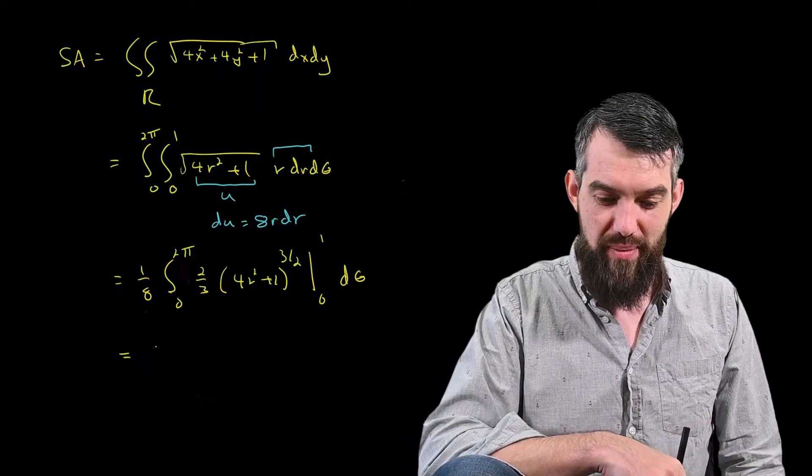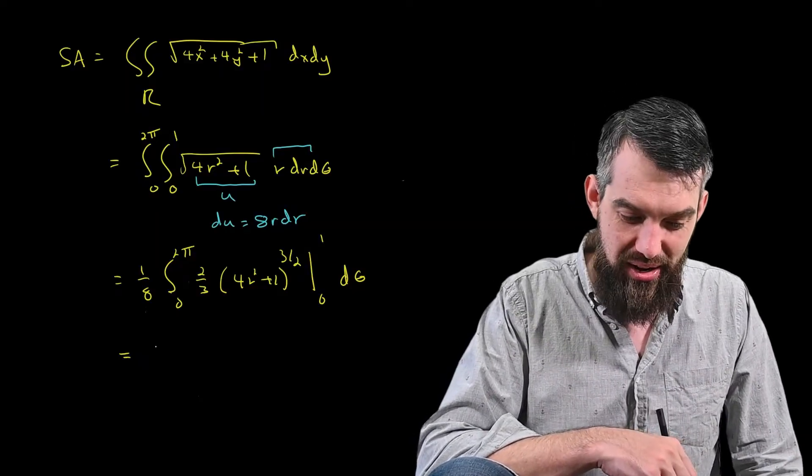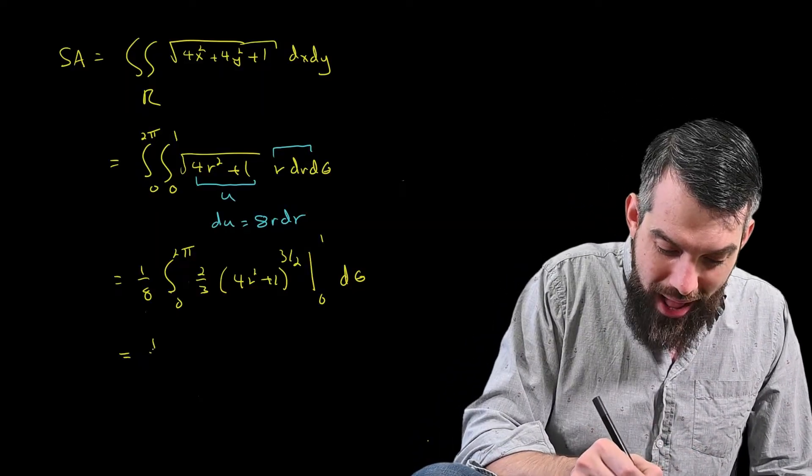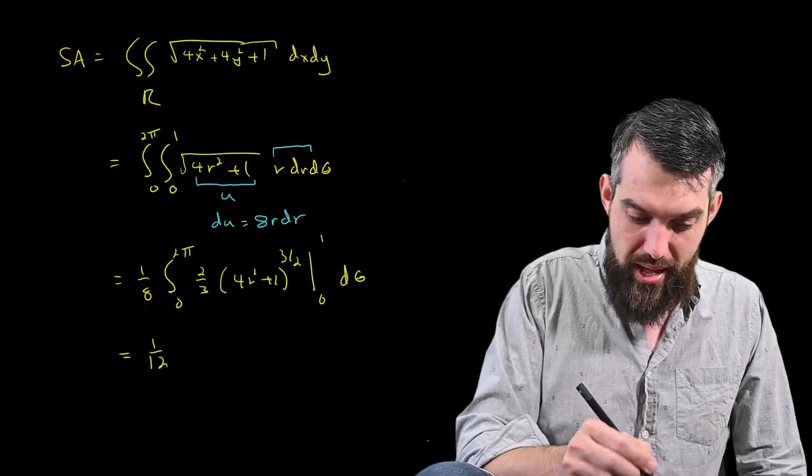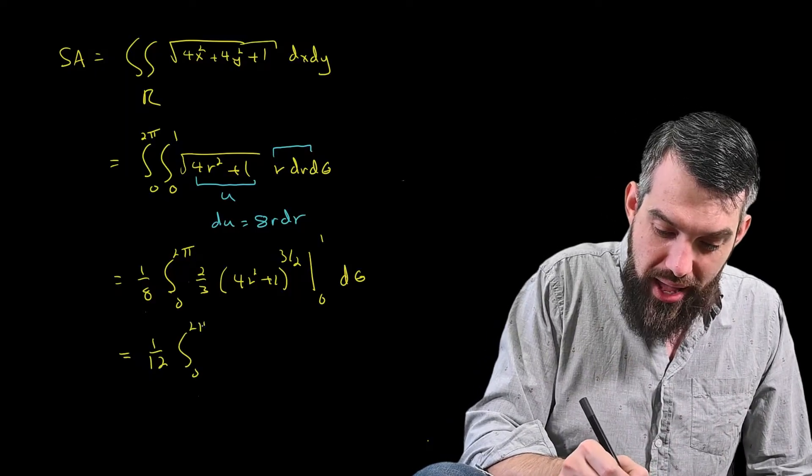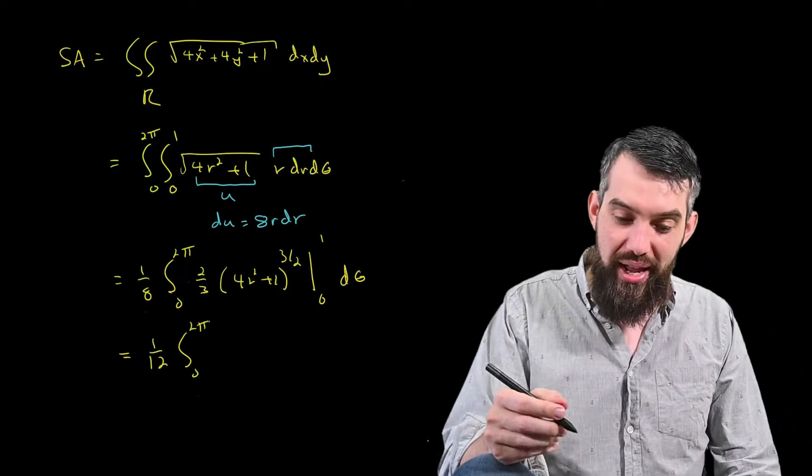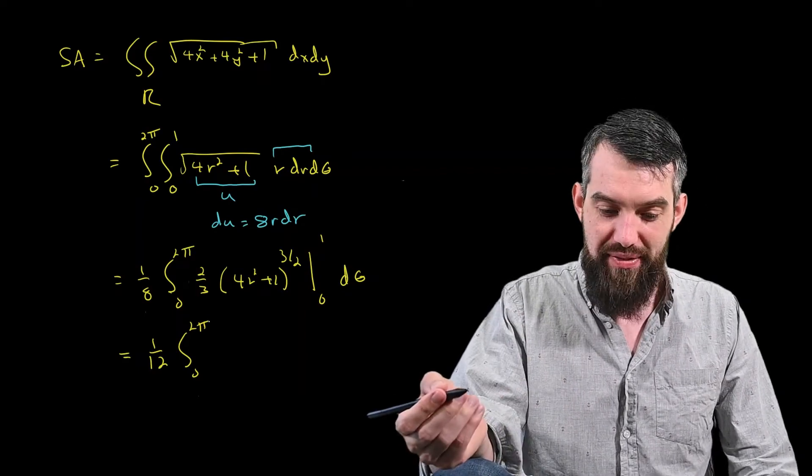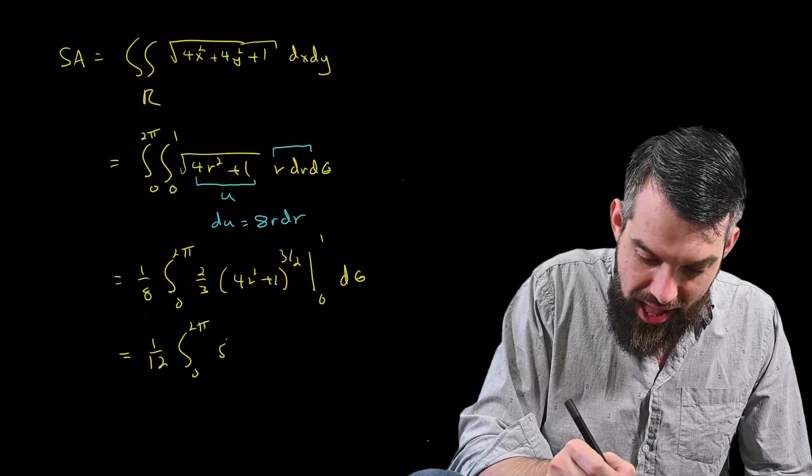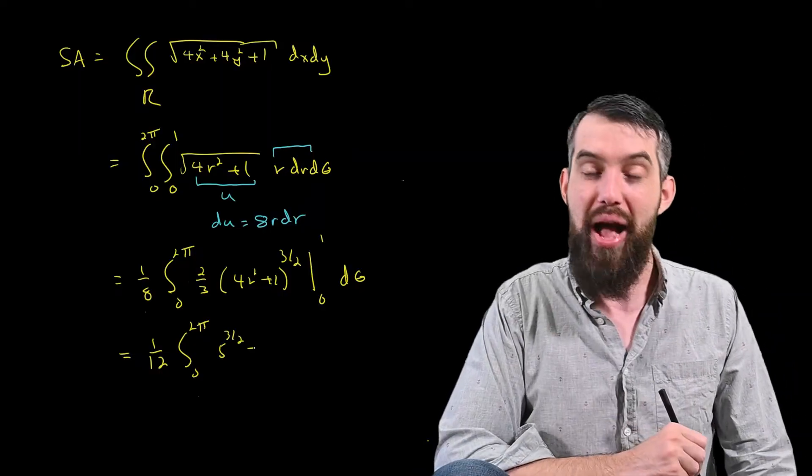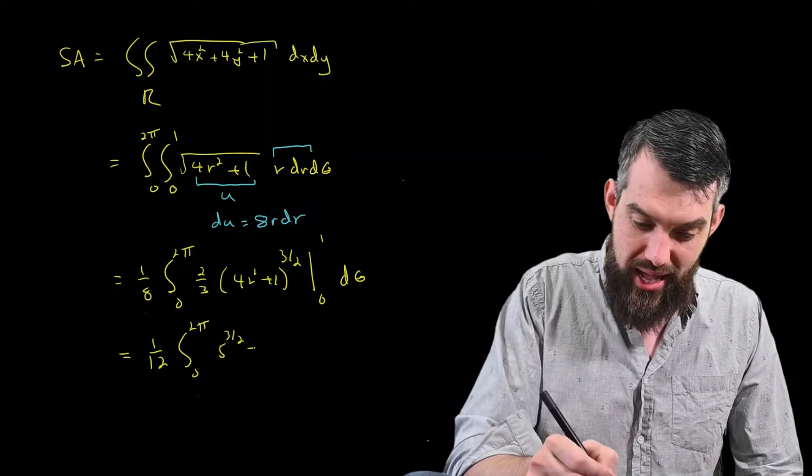This is just a computational problem at this point. So this looks like 1 twelfth, integral from 0 to 2 pi. If I plug this 1 in, I'm going to get 5 to the 3 halves, and so I have 5 to the 3 halves, minus if I plug in 0, I'm just going to get a 1, and then d theta.